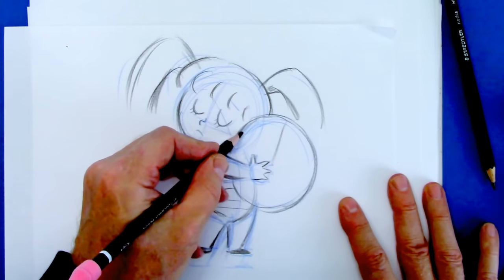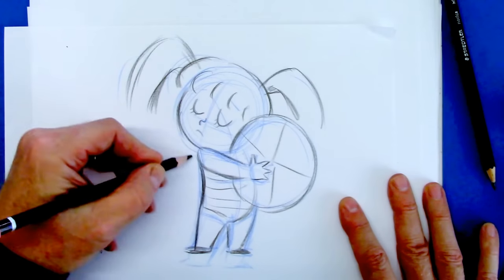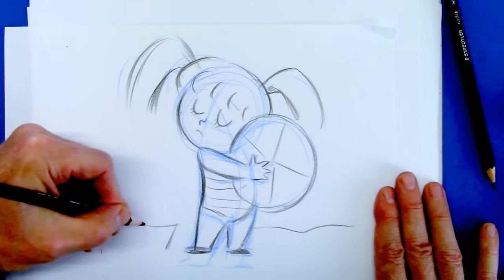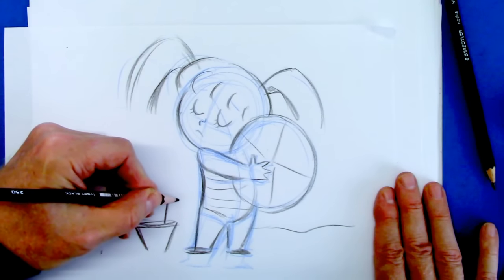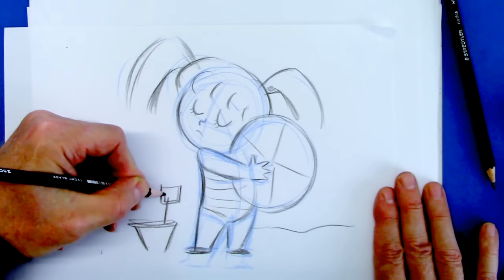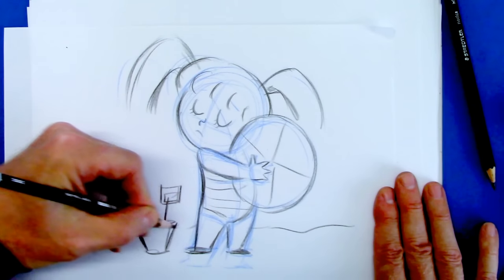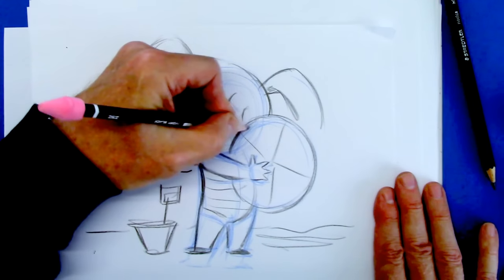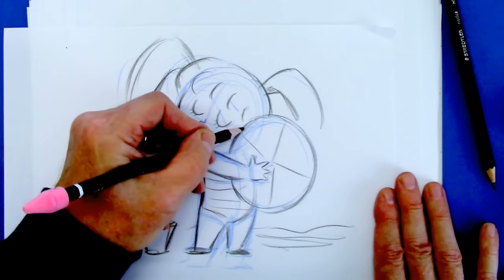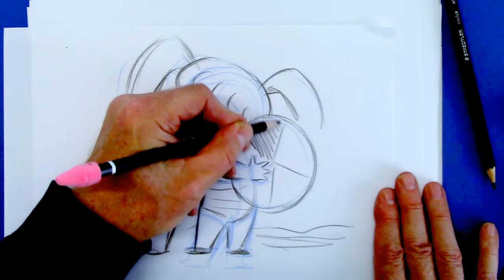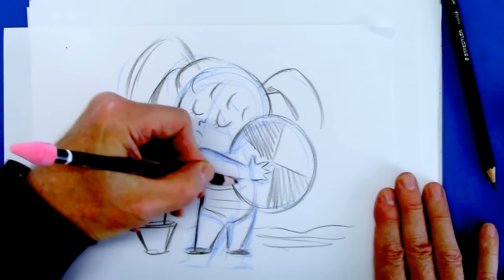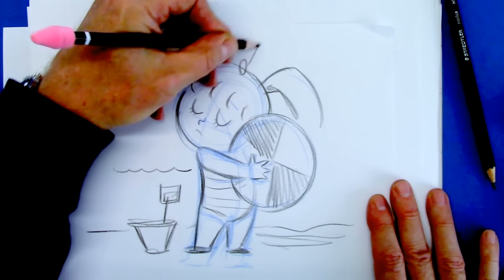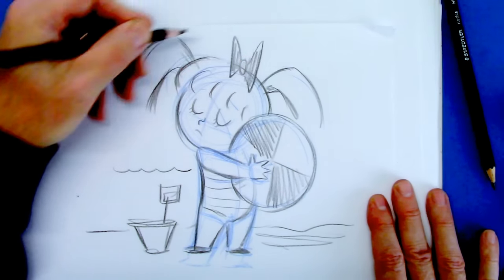And this will be a beach ball. There's a pail for you. Let's checkerboard that. Okay, so there you go. It's that cute little girl who will not share.